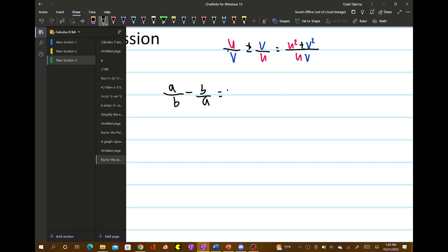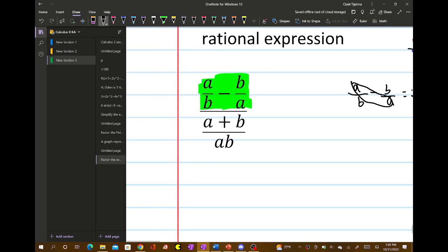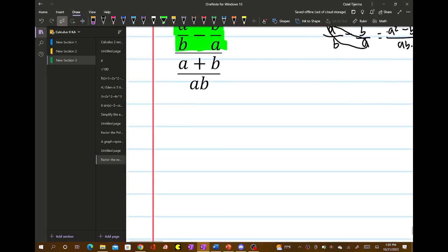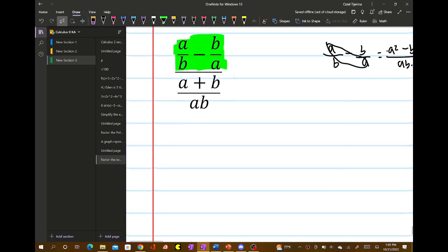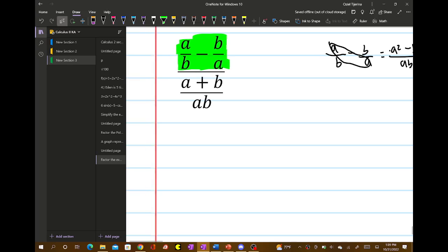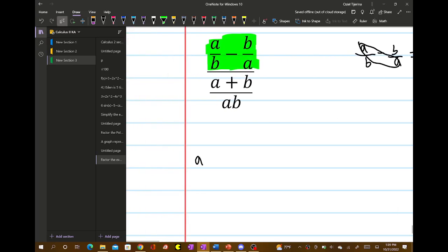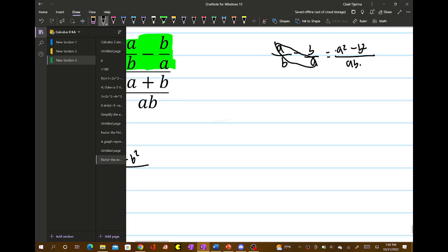So applying this, we get a squared minus b squared over ab. That's what goes in the numerator.